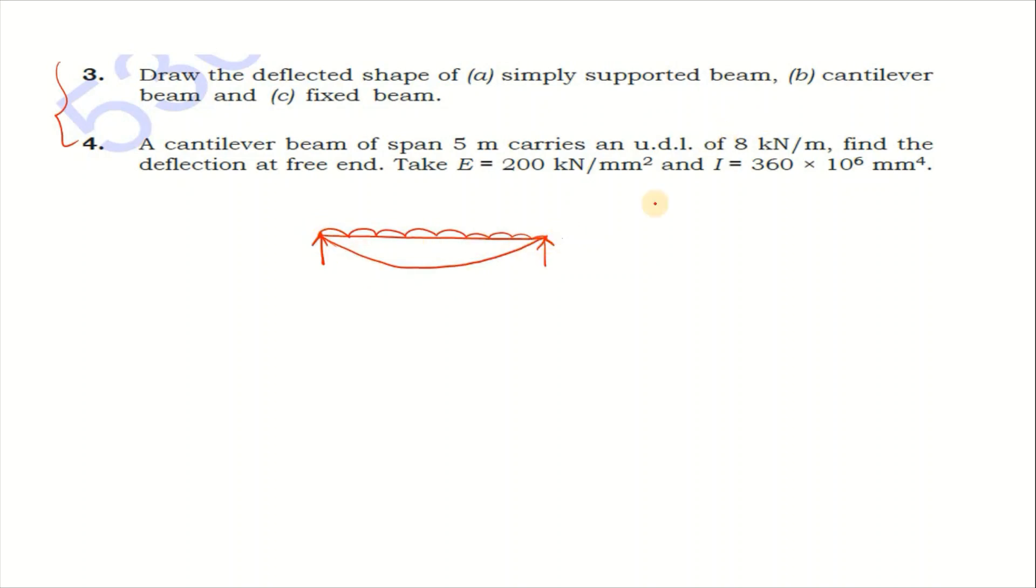The deflected shape starts but doesn't change at the starting section, remaining straight. When the bending moment is zero, there's no curve.